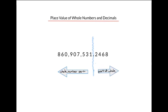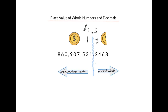Imagine for a second that you had a dollar coin and half a dollar coin. The whole part would be to the left of the decimal and the half part would be to the right of the decimal. And so the decimal separates the dollars from the cents — in this case, a dollar fifty.